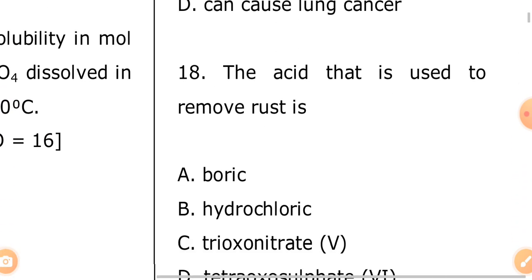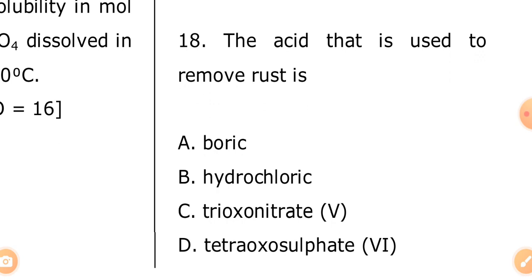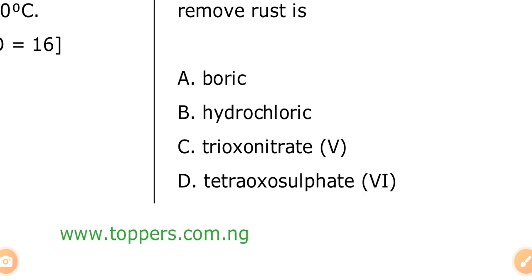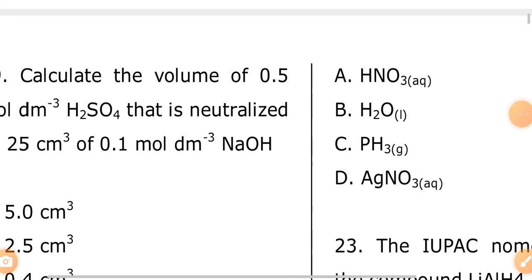Question eighteen: the acid used to remove rust. Assignment: define rust in the comment section and tell me the conditions that must be present for rusting to take place. The options are — A: boric acid, B: hydrochloric acid, C: trioxonitrate acid, D: tetraoxosulfate acid. The answer is B — hydrochloric acid.